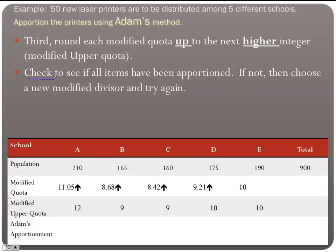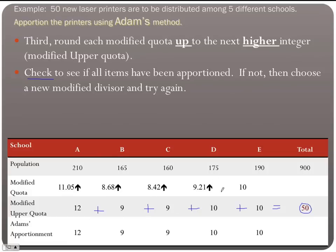Check: have all items been apportioned? Adding the modified upper quotas: 12 + 9 + 9 + 10 + 10 = 50. That's exactly the number we're looking for, so Adam's apportionment is: A = 12, B = 9, C = 9, D = 10, E = 10.